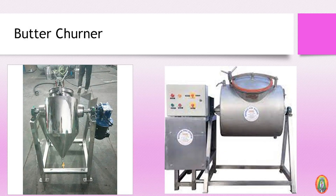Churning is carried out at 100 RPM. After churning, we collect the mass of concentrated fat, which is known as butter. This is washed to remove impurities, and then common salt is added up to 2.5%. The butter is then packed and kept in the cold room until it gets dispatched.